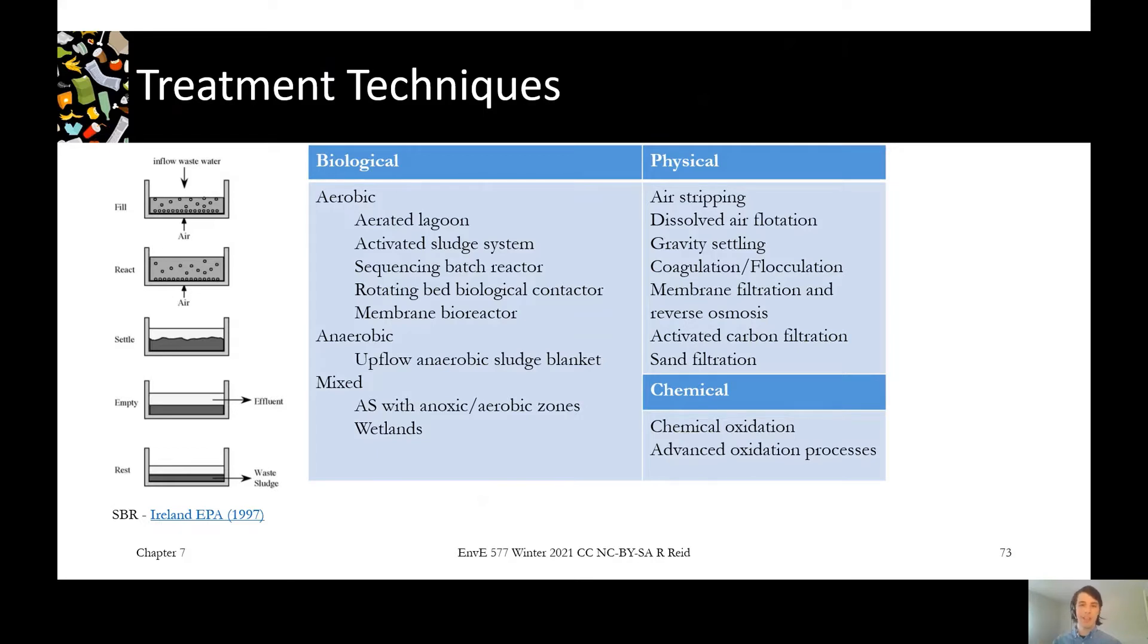Coagulation flocculation can encourage some of those suspended solids to come out. Membrane filtration and reverse osmosis is going to go from small solids all the way down to the molecular level and reverse osmosis will get us very high effluent quality. It'll remove those chlorides. It just takes a lot of energy to do it. So you might do some other solids removal steps before you get there.